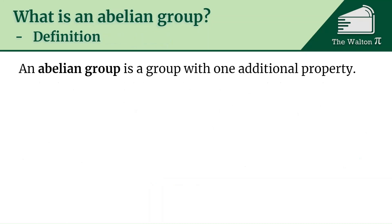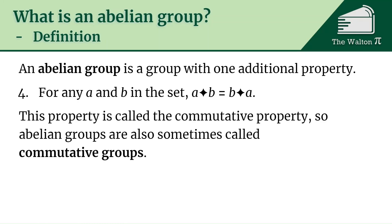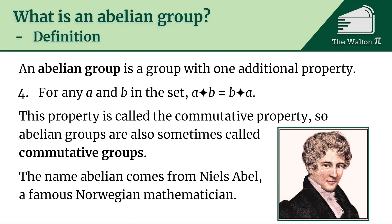Now an Abelian group is any group that has one additional property: for any a and b in the set, a star b is the same as b star a. This property is called the commutative property, so Abelian groups are also sometimes referred to as commutative groups.